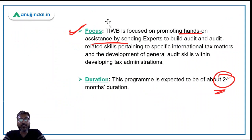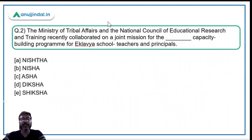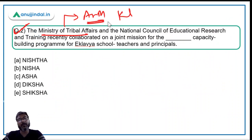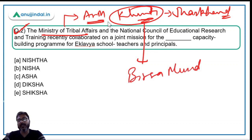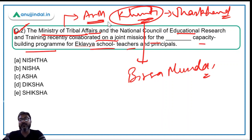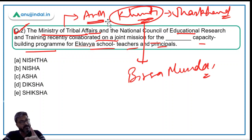Now let's move to question number two, which is about an MOU. The Ministry of Tribal Affairs is headed by Arjun Munda, whose Lok Sabha constituency is Khunti in Jharkhand — also the place of birth of the great Birsa Munda. The Ministry of Tribal Affairs and NCERT recently collaborated on a joint mission for the NISHTHA capacity building program for Eklavya Model Residential School teachers and principals.